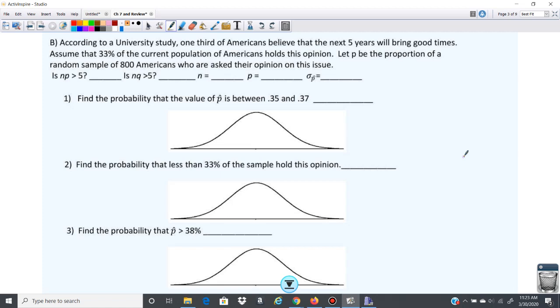Okay, so we have, according to a university study, one-third of Americans believe that the next five years will bring good times. So assume that 33% of the current population of Americans hold this opinion. P is going to be the proportion of a random sample of 800 Americans who are asked their opinion on this issue. And then we're going to go through this.